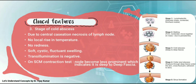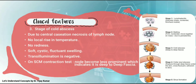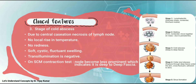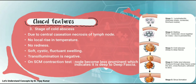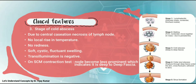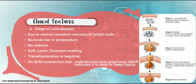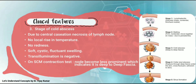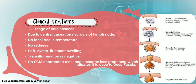Third stage: cold abscess. Due to central caseation necrosis of the lymph node, there is no local rise in temperature and no redness. A soft, cystic, fluctuant swelling is present. Transillumination is negative. On sternocleidomastoid contraction test, nodes become less prominent, indicating they are deep to the deep fascia.